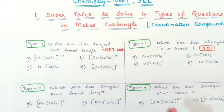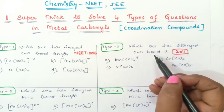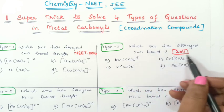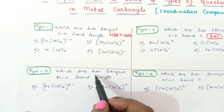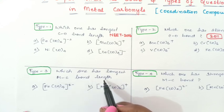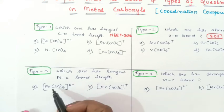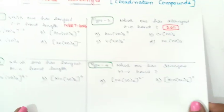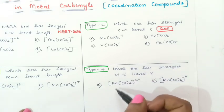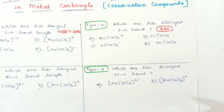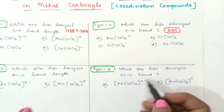Four options are given to you. The second type of question is: which one has the strongest CO bond? This question has appeared in the 2011 question paper. The third type is: which one has the longest MC bond length? MC is metal-carbon bond length. And the fourth type of question is: which one has the strongest MC bond? You can take any four options and we will be able to find out which one has the strongest MC bond.